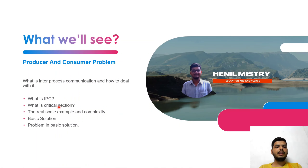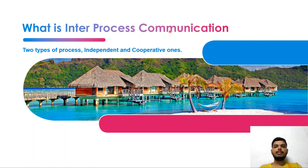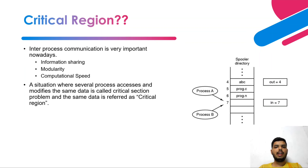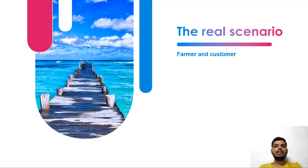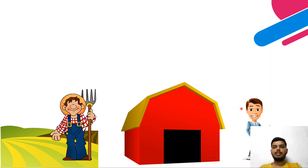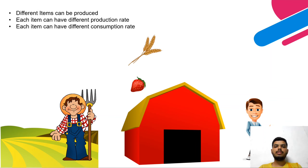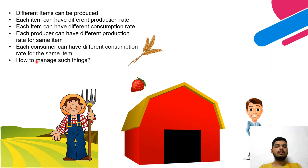In the first video we covered what IPC is, the critical section, and a real-world example. We saw inter-process communication with its two types of processes — you can refer to the first video for the full explanation. We also covered the critical region using a real scenario: a farmer and a customer, where the farmer grows different types of crops and the customer consumes them, and we examined the complexity through three key points.